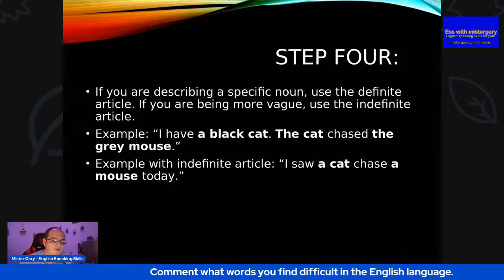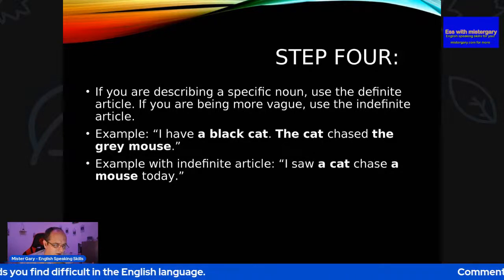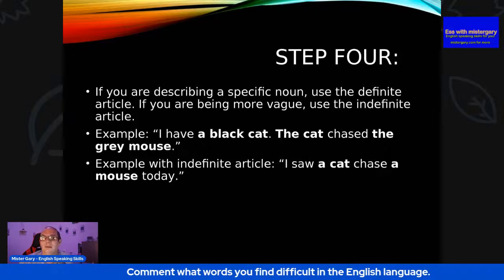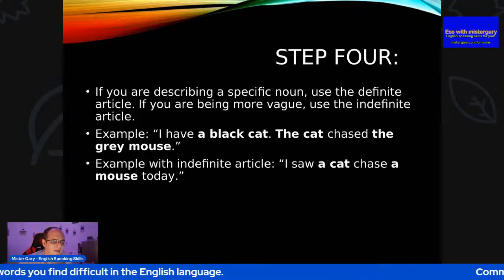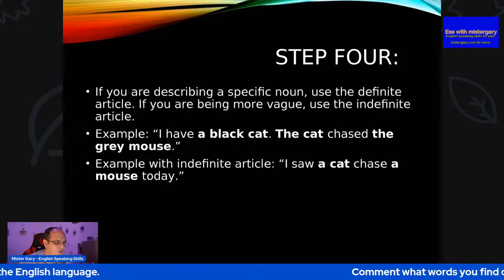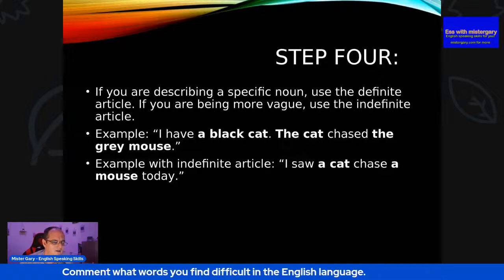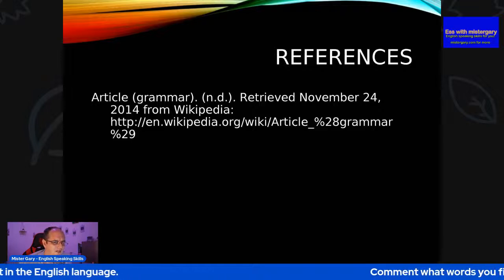If you are being more vague — and vague means talking about something without giving many details or being too specific — then use 'a' or 'an'. Example: 'I have a black cat. The cat chased the grey mouse.' With the indefinite article: 'I saw a cat chase a mouse today.' Good job. I'm pleased that you've got that.